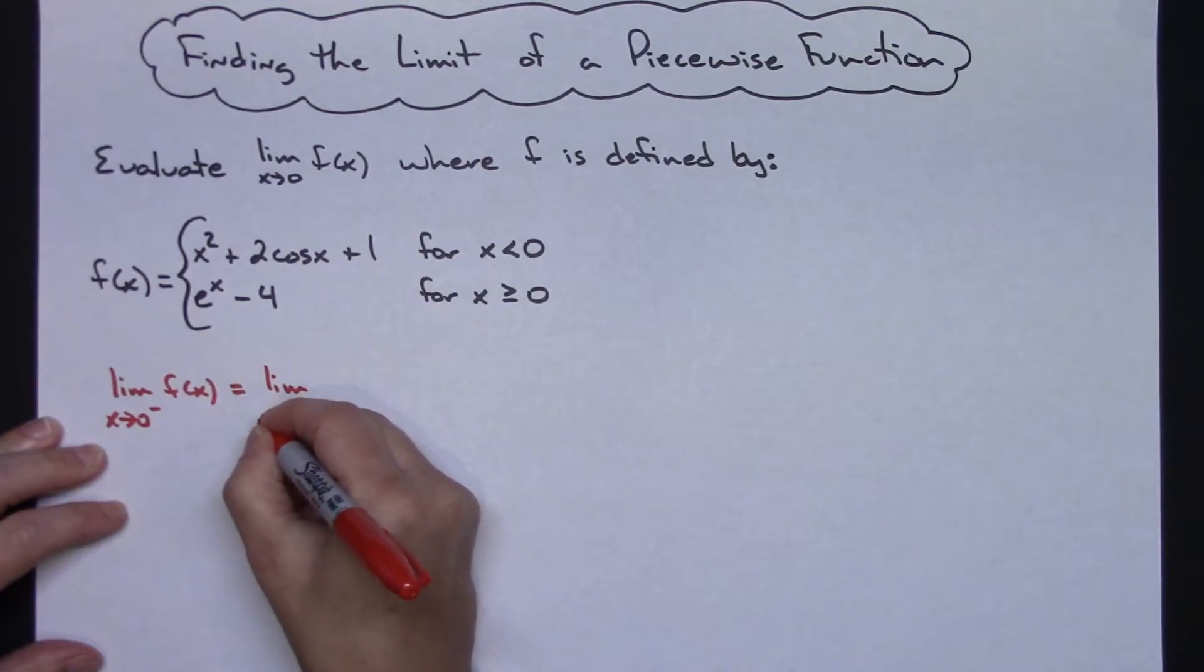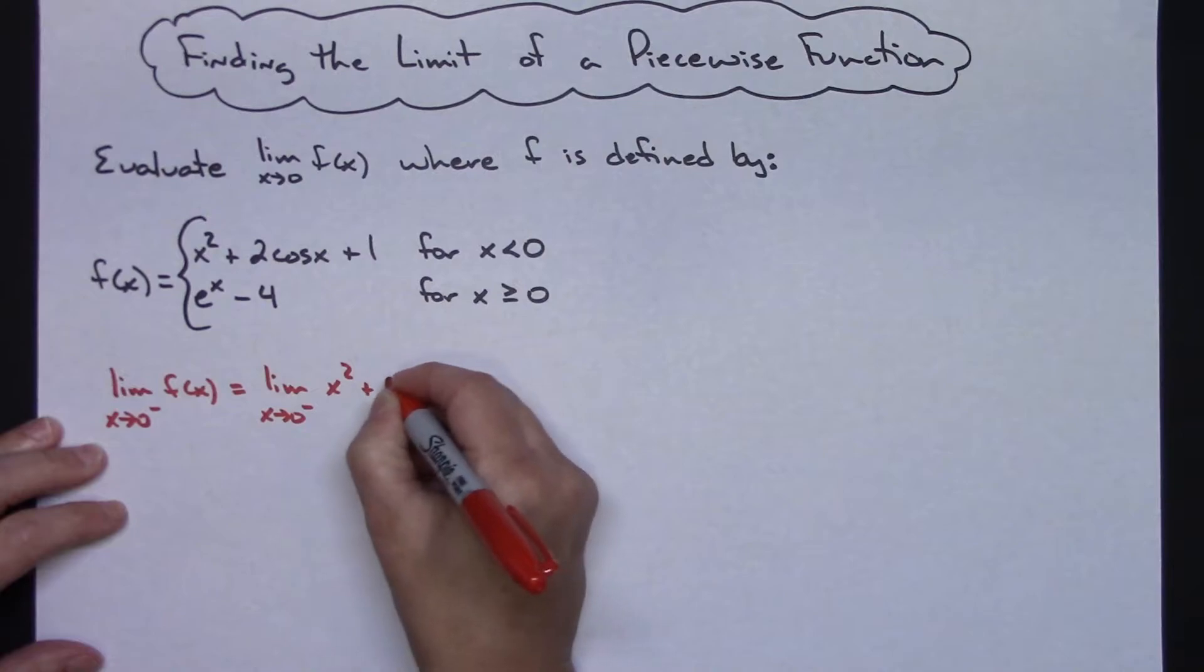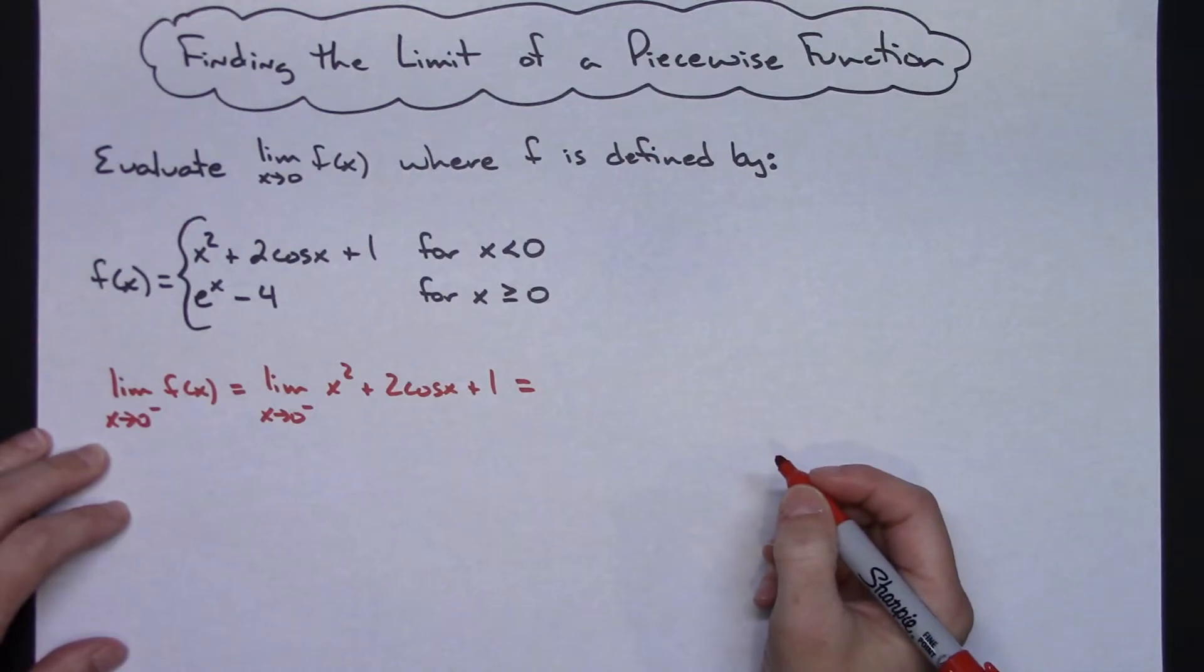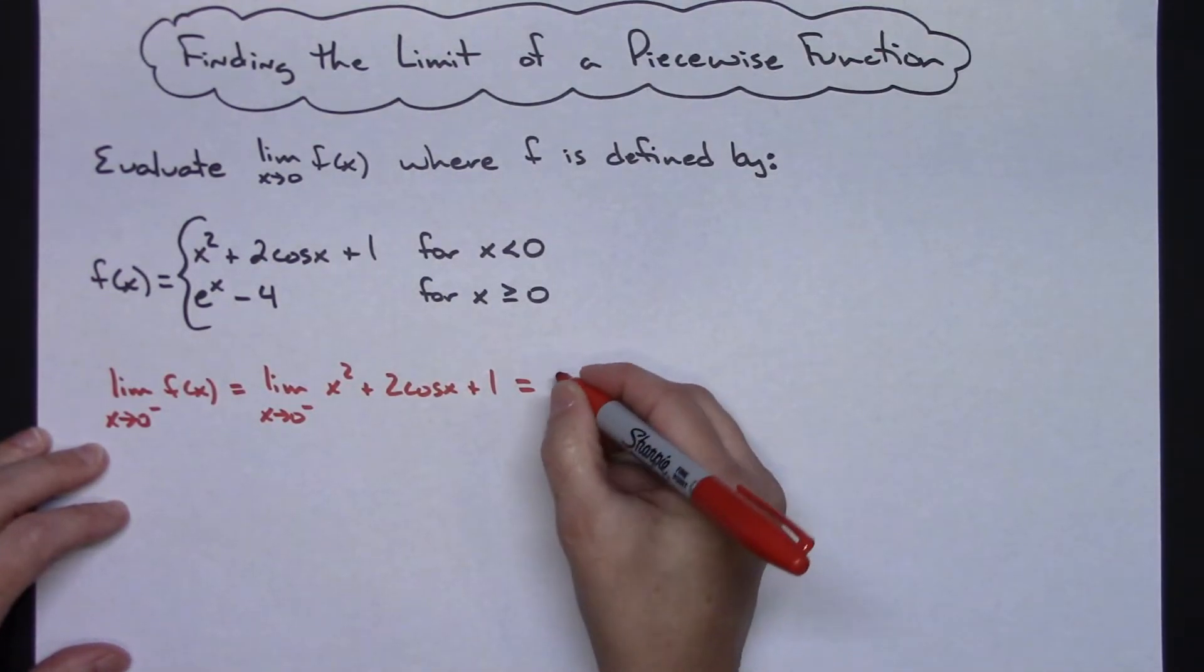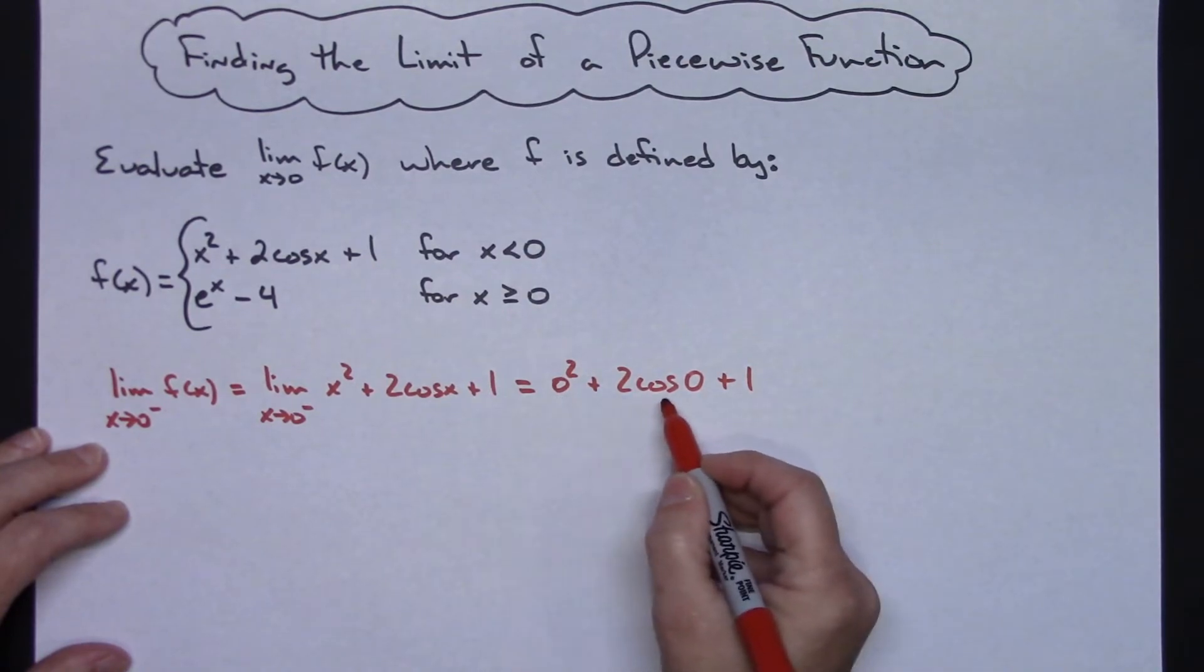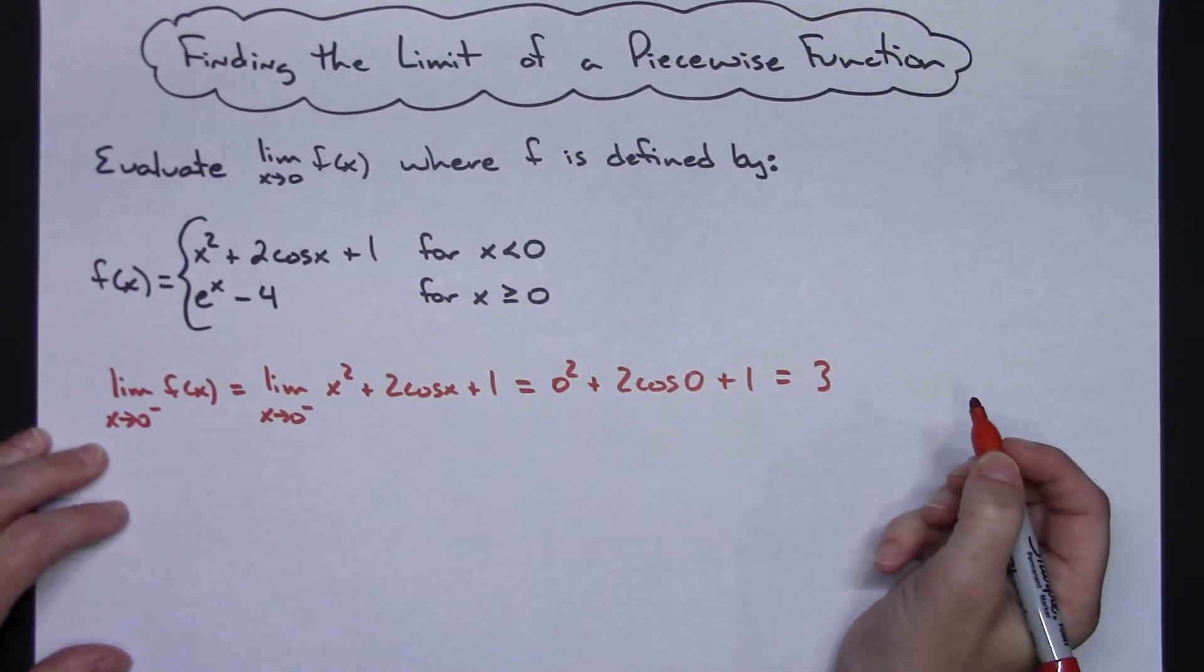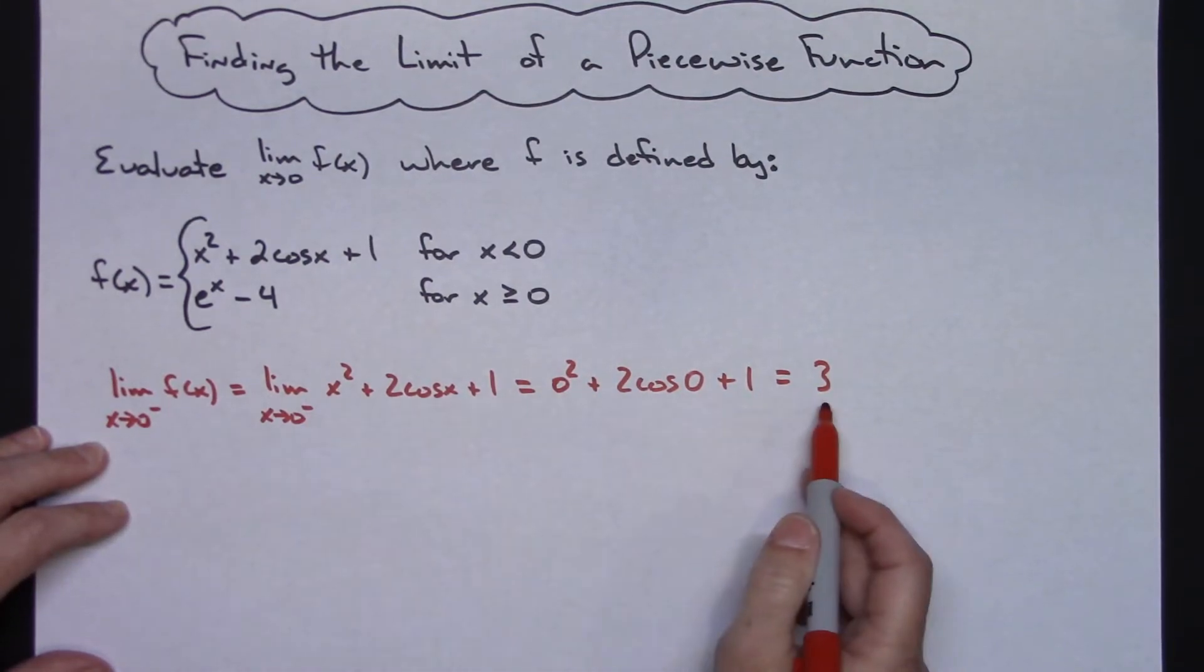So the limit as x approaches 0 from the left of x squared plus 2 cosine x plus 1. At this point I'm going to do a direct substitution and plug 0 in for each of those: 0 squared plus 2 cosine 0 plus 1. I've got 0 here, cosine 0 is 1, 1 times 2 is 2, plus 1 more is going to give me a 3. So evaluating this limit as x approaches 0 from the left I get a 3.